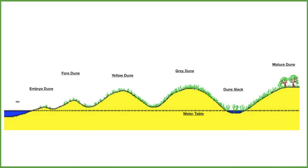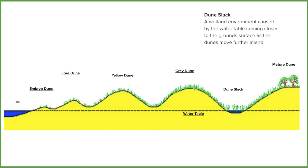A slack dune has been completely cut off from the supply of wind and sand by the big grey dune. In the dip, it goes below the water table, which means that water can seep up from the ground and often find surface water pooling there as well.